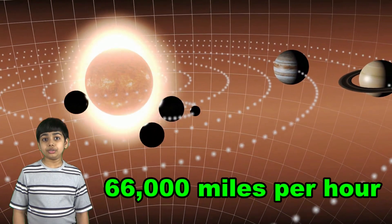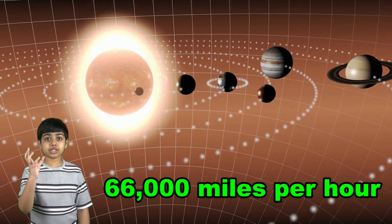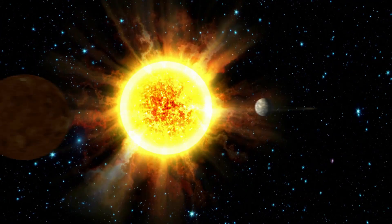So not only are you spinning a thousand miles an hour with the Earth, you're also moving 66,000 miles per hour around the sun.